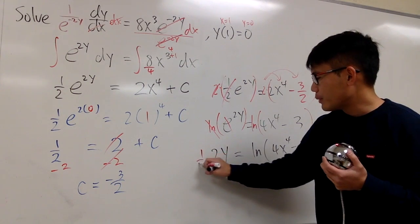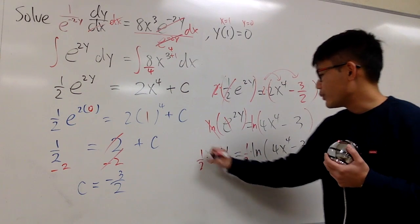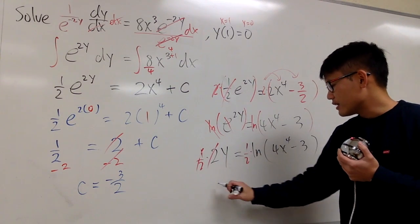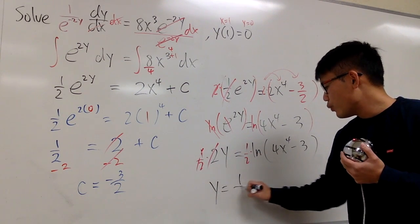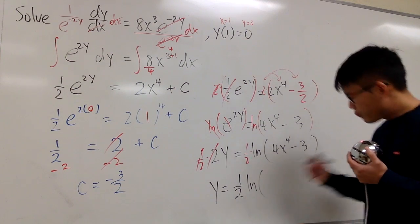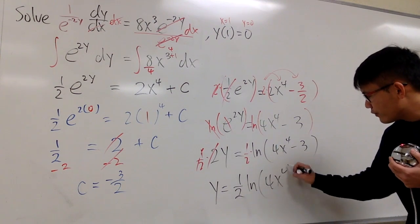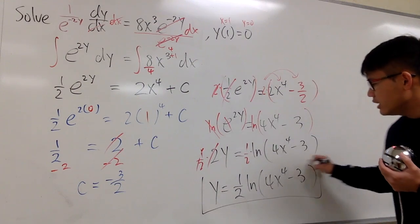Finally, I multiply both sides by 1 half. And we are done. So I will write this down nicely for you guys. y is equal to 1 half ln of 4x to the 4th power minus 3. This is it.